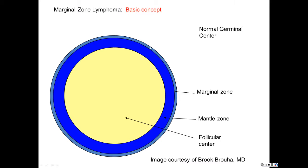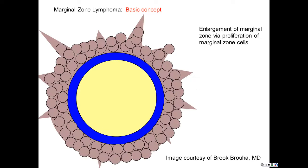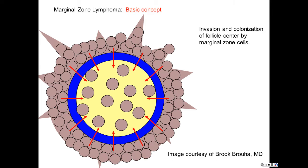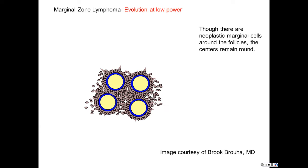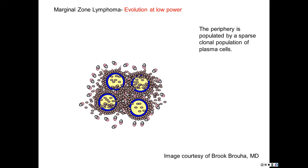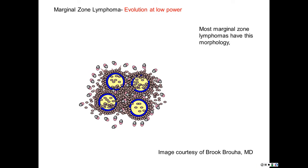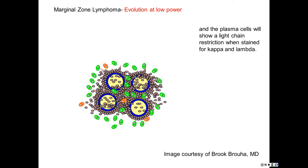In marginal zone lymphoma, our marginal zone is going to go bad — that population of gray cells at the periphery starts to expand and then invade. What you're going to see is germinal centers that are normal with this kind of spreading gray stuff around and in between. There are always plasma cells at the periphery — that's where you're going to see clonality. You're not usually going to see kappa or lambda light chain restriction in the germinal center or surrounding marginal zone population; you'll see it out in the plasma cells.